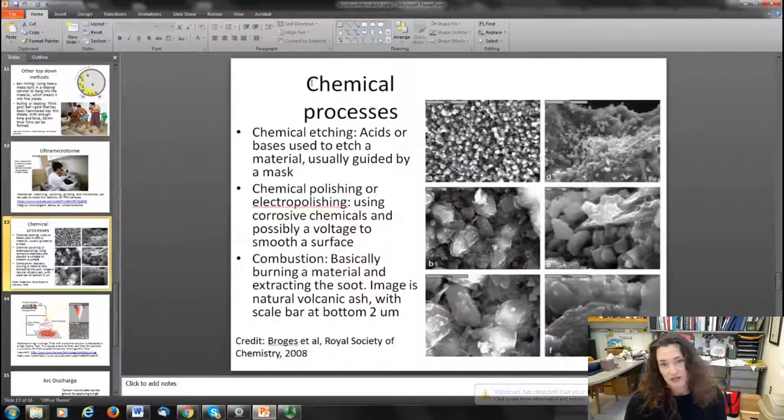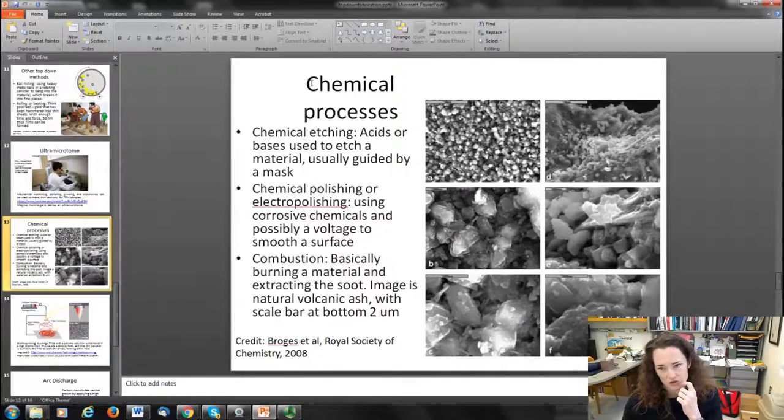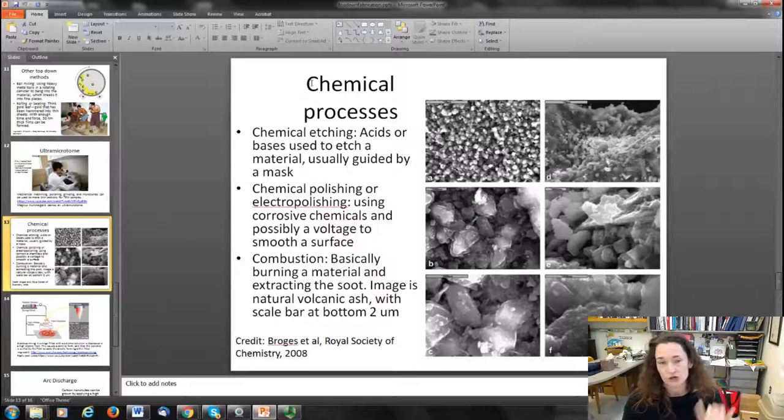There's chemical processes, lots and lots of chemical processes that are top-down that can form nanoparticles or nanofilms. You can do a chemical etch—use acids or bases to etch a material guided by a mask and make a pattern. You can do chemical polishing or electropolishing.